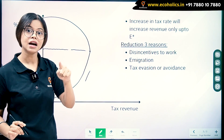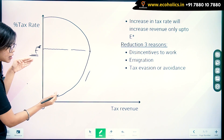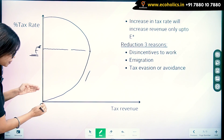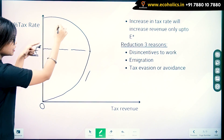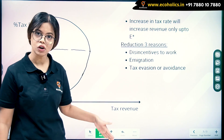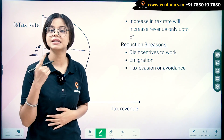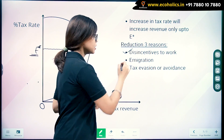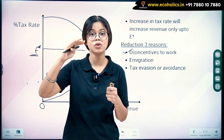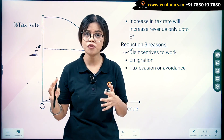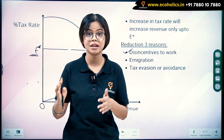An increase in tax rate will increase revenue only up to the point E-star. You can see the tax rate is rising and the tax revenue is also rising, but not by as much — compared to before, it is rising very little. After this point it starts to fall. The revenue falls because of three reasons. First: people get disincentivized. There is no incentive left for them to work, because the more hard work they do, given the high tax rate, the government taxes away that profit.